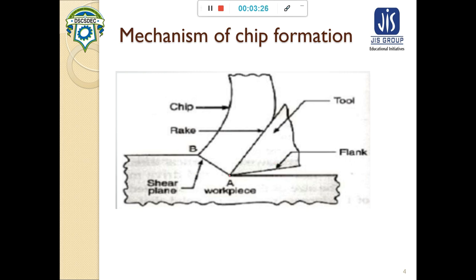When the tool comes into contact with the workpiece, a compression is applied at the tip. Due to this compression, stress is induced and shearing occurs. Due to this shearing, material is forced to be removed and it moves in the direction guided by the rake face. The face opposite to the rake face is the flank face. This is how the chip is formed in the machining process — chip formation results from shear deformation.